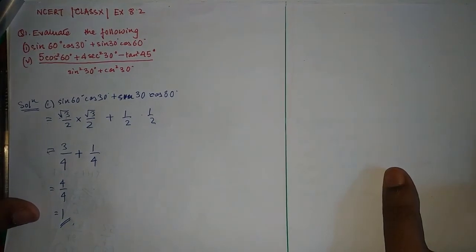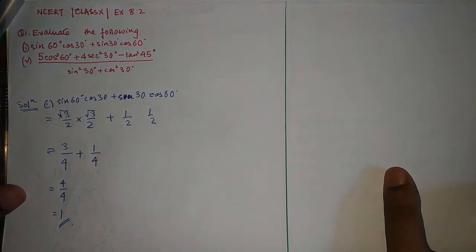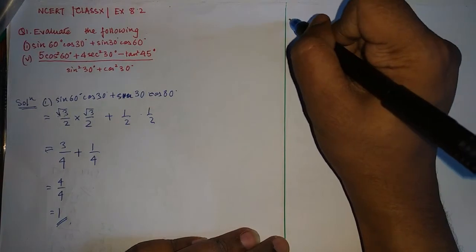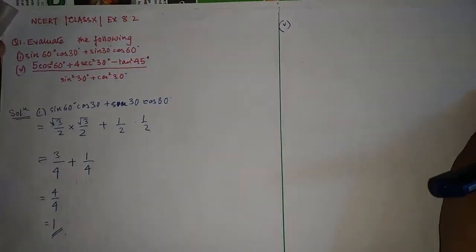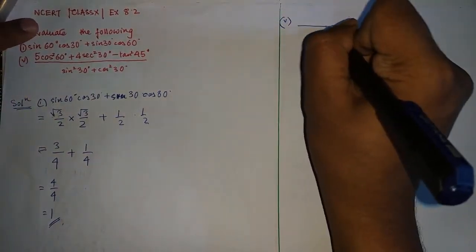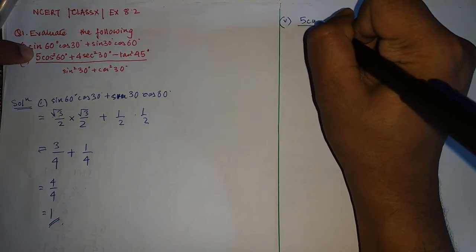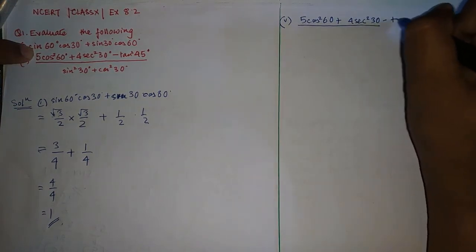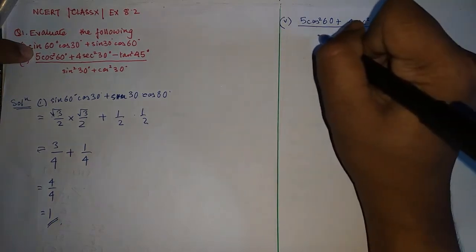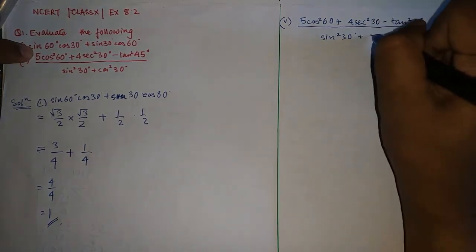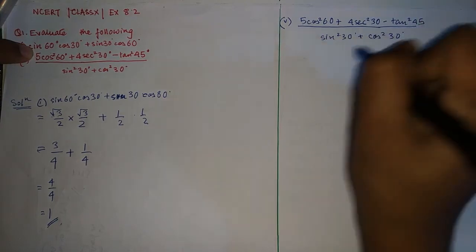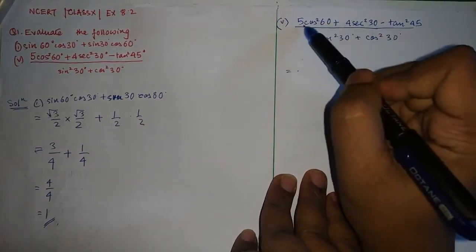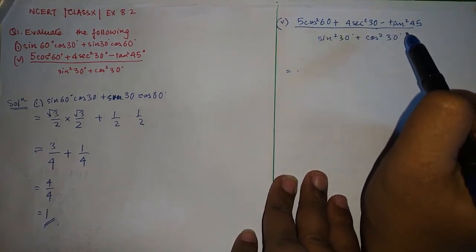Questions 2 through 4 are similar — just plug in values. Let's move to Question 5, which is presented in a more complicated way. The expression is: (5cos²60° + 4sec²30° − tan²45°) / (sin²30° + cos²30°).